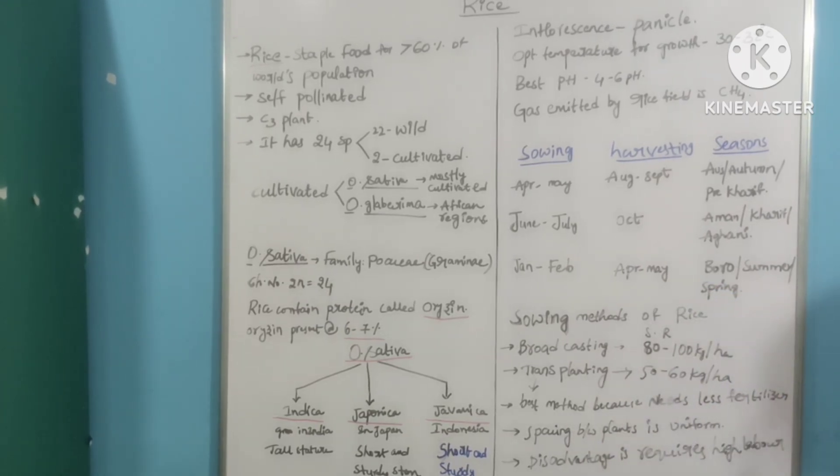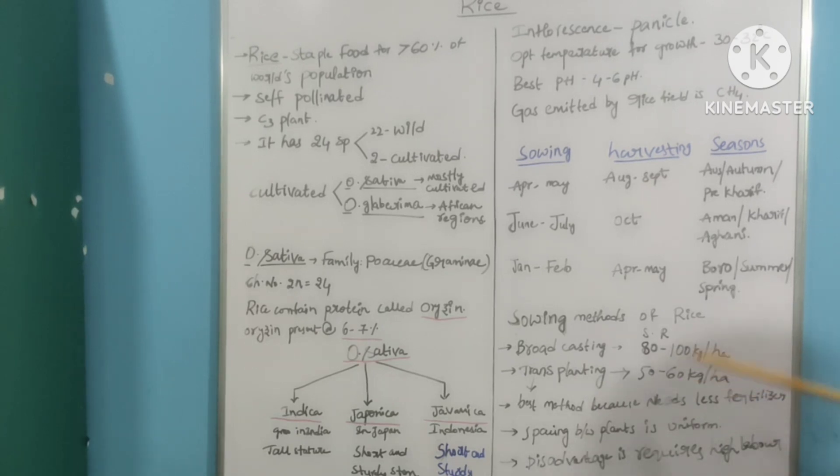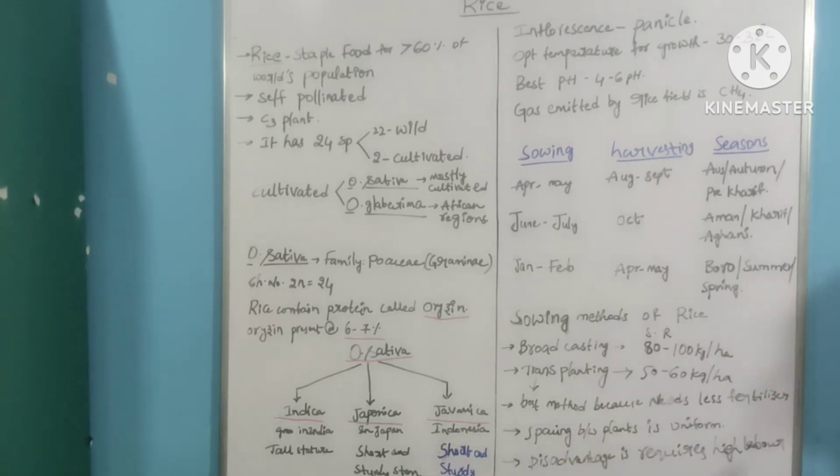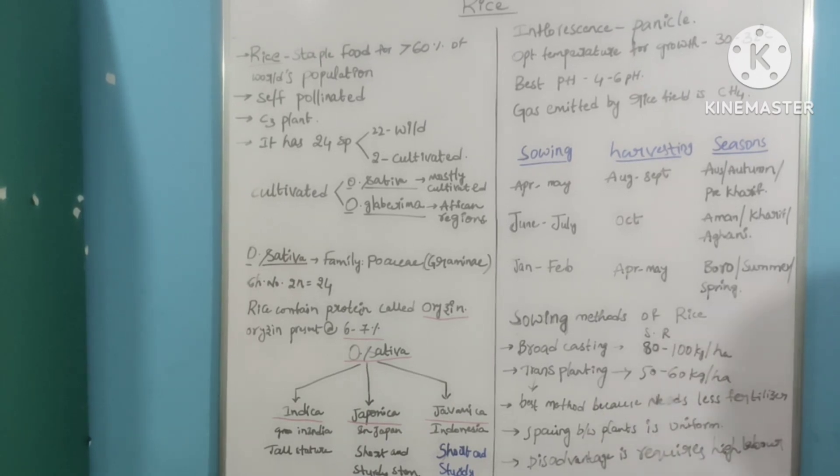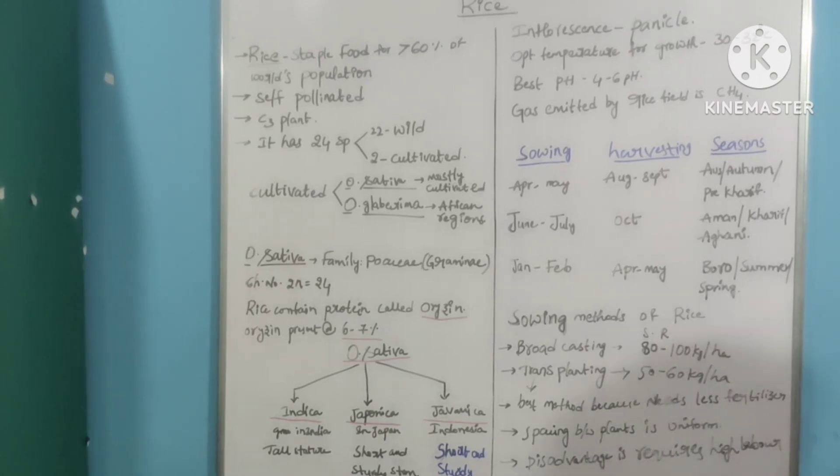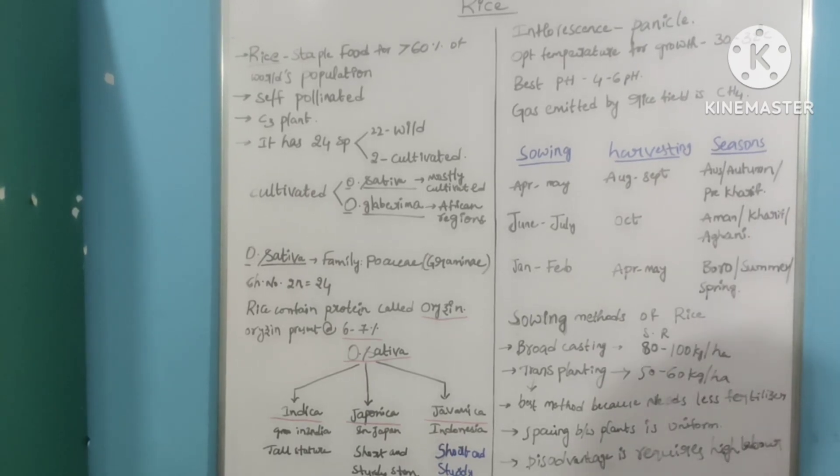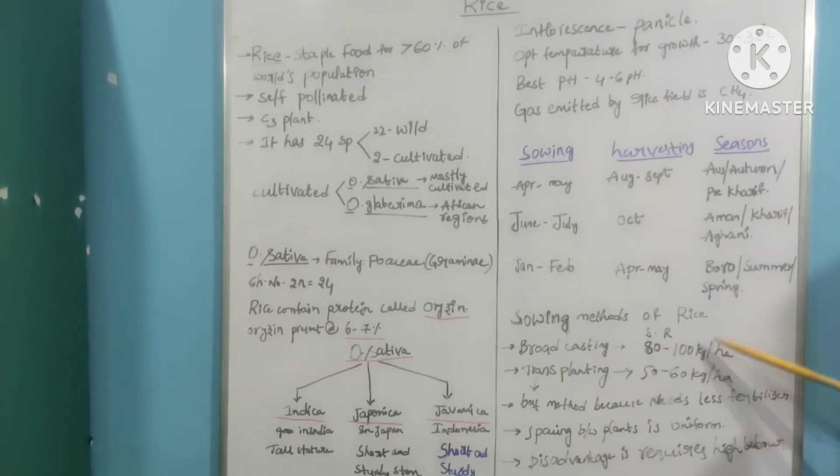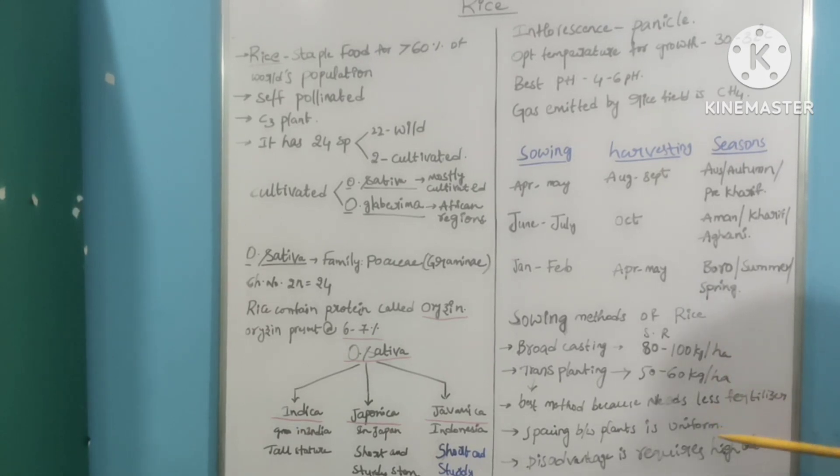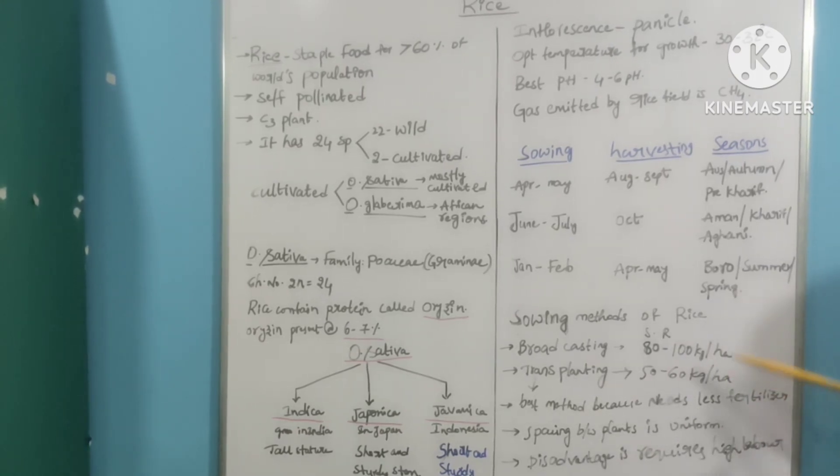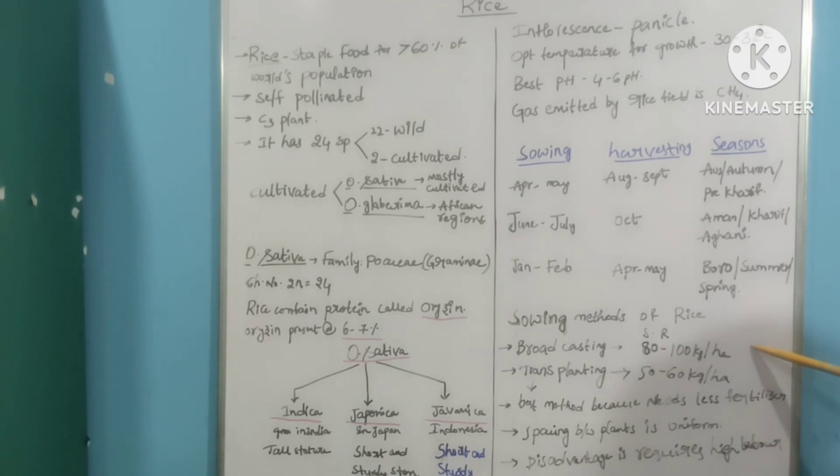Sowing methods of rice: one is broadcasting and the other one is transplanting rice. For the broadcasting method, we should recommend the seed rate of 80 to 100 kg per hectare. For transplanting, 50 to 60 kg per hectare. Because for broadcasting, we just broadcast the seeds, so that leads to high seed rate.